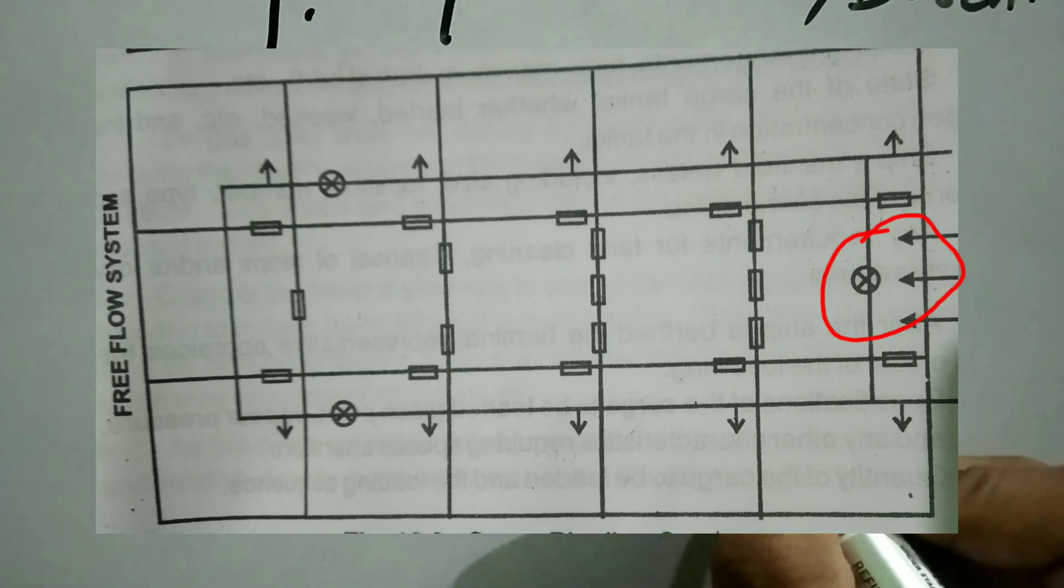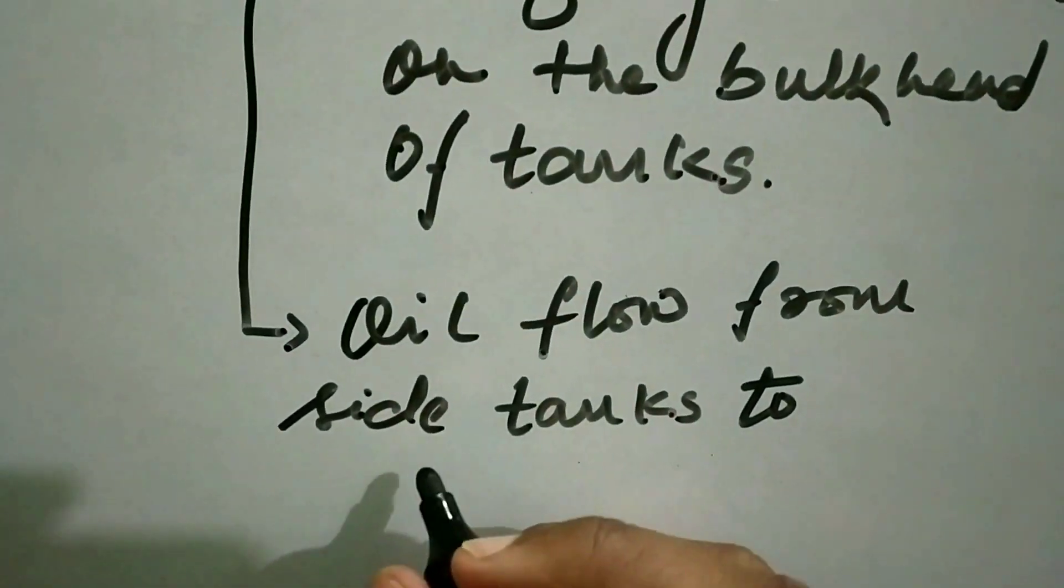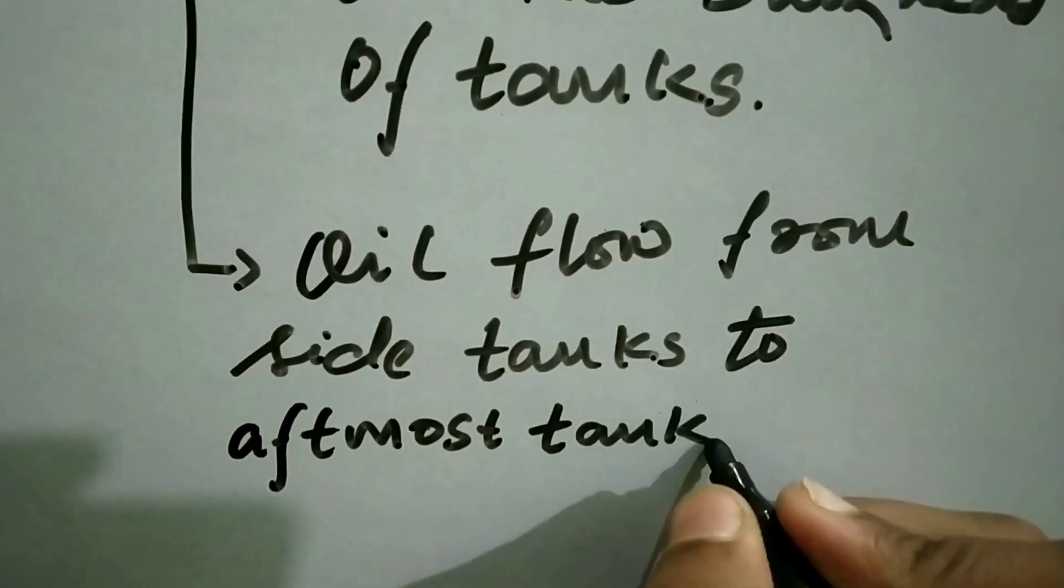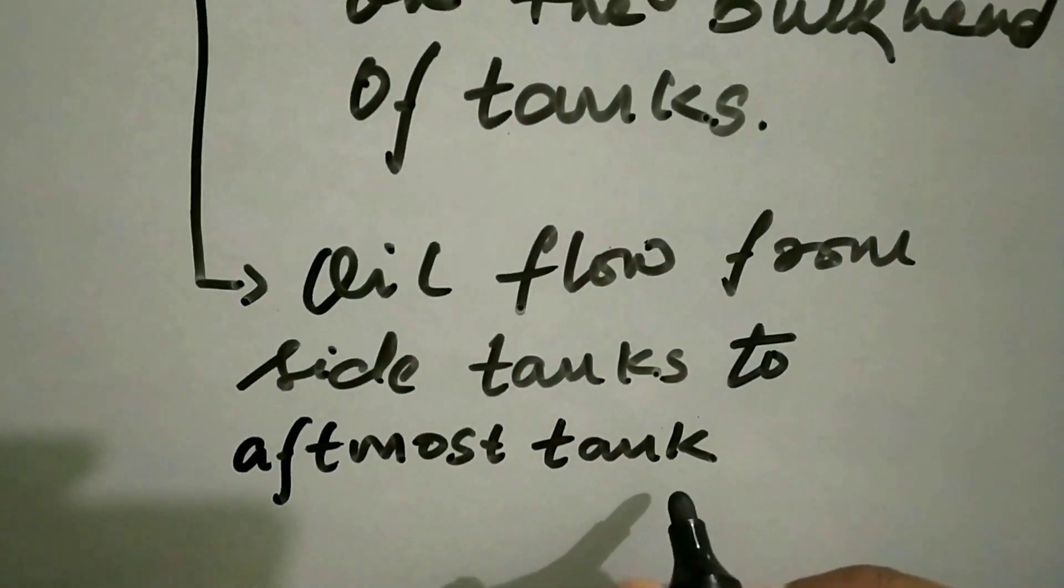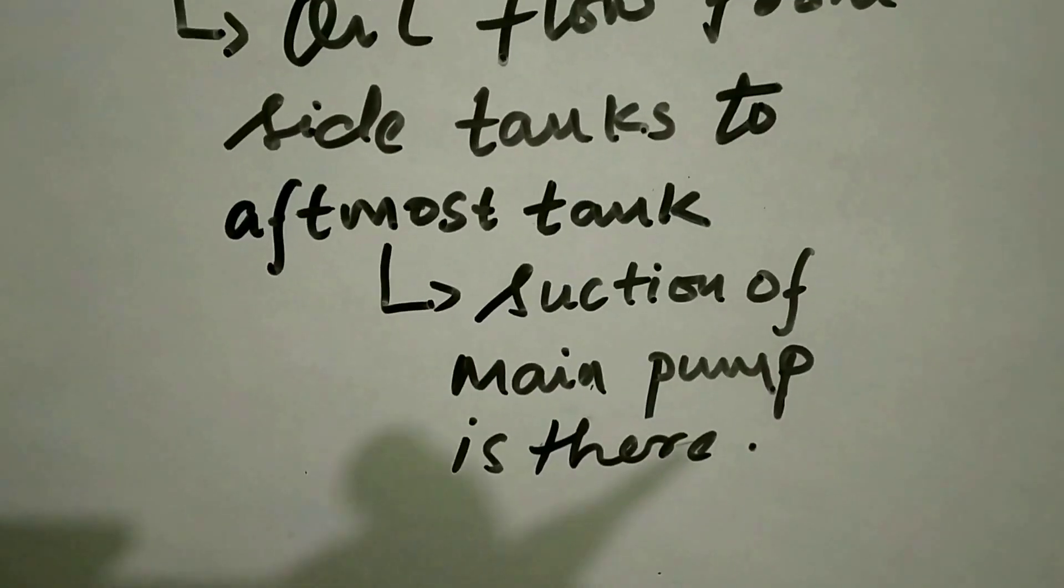From there, the stern trim of the vessel causes the oil to flow to the aftmost tank because the main suction of the cargo pumps are situated in the aftmost tank. In this type of system, any residues are discharged by stripping pump.